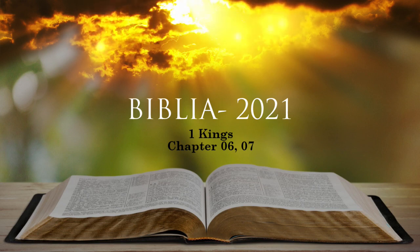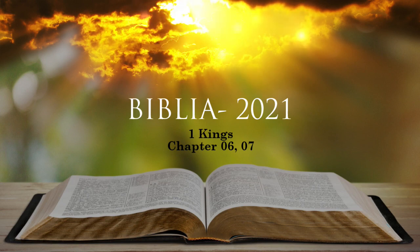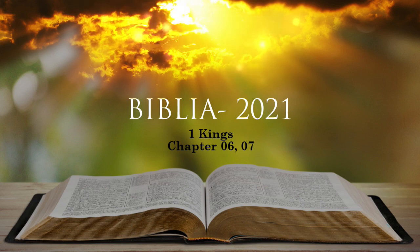Solomon covered the inside of the temple with pure gold and he extended gold chains across the front of the inner sanctuary which was overlaid with gold. So he overlaid the whole interior with gold. He also overlaid with gold the altar that belonged to the inner sanctuary. For the inner sanctuary, he made a pair of cherubim out of olive wood, each 10 cubits high.